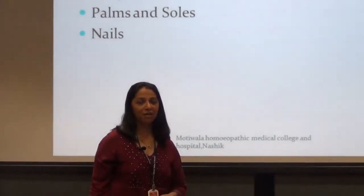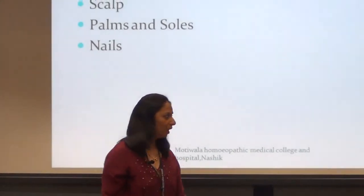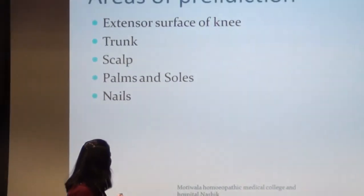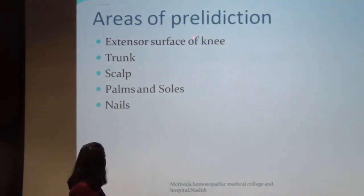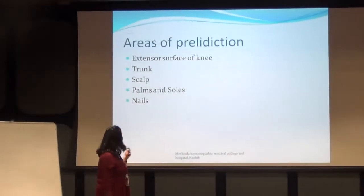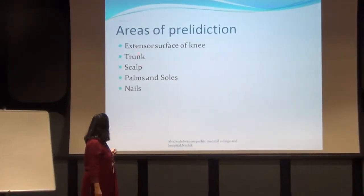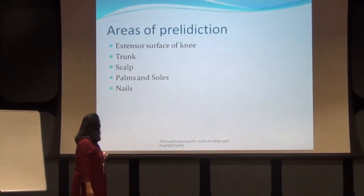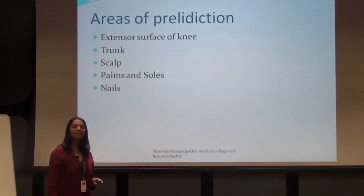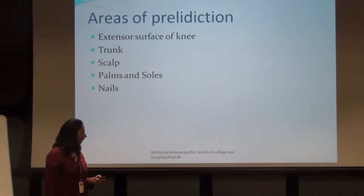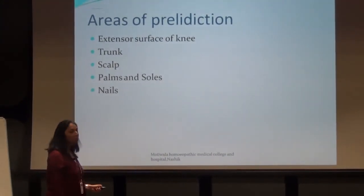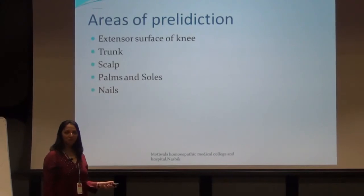Areas of predilection: psoriasis is more commonly seen on the extensor surfaces of the knee, very commonly on the trunk, scalp, palms and soles, and knees. Let us now look at some pictures of psoriasis.